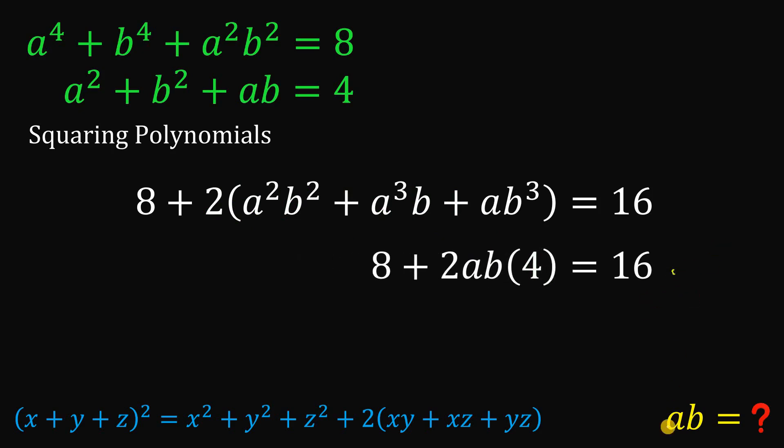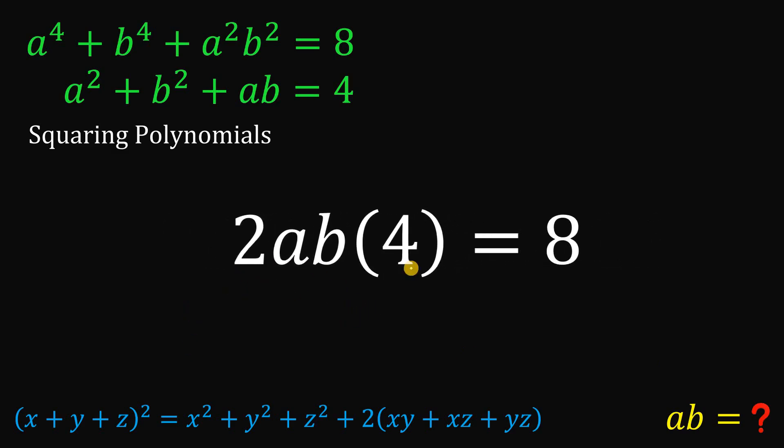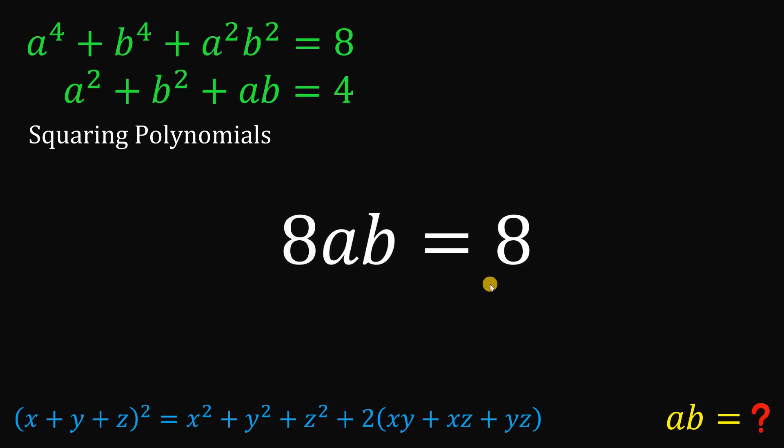And using this equation, we can now solve for the value of a times b. First, subtract 8 on both sides. Multiply 2 and 4. This will give us 8ab. Divide both sides by 8. We get ab equals 1.